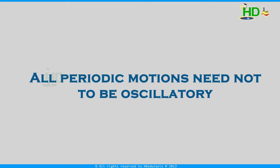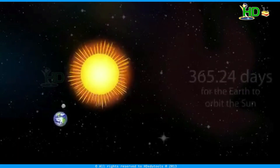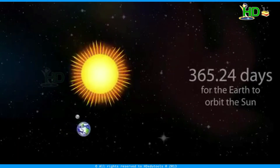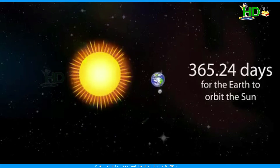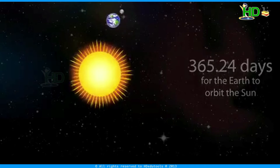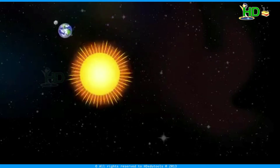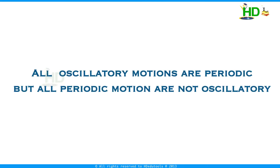A periodic motion need not be oscillatory. For example, consider the motion of the Earth around the Sun — it is a periodic motion, repeating its path every one year, but it is not an oscillatory motion. That means all oscillatory motions are periodic, but all periodic motions are not oscillatory.